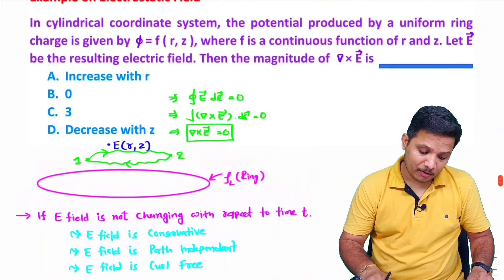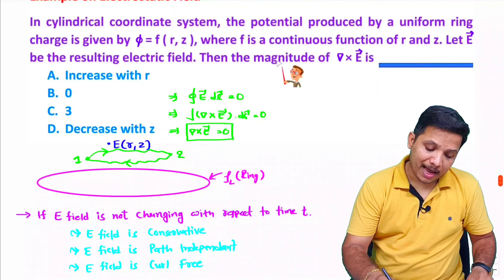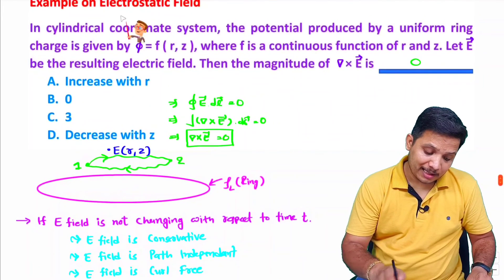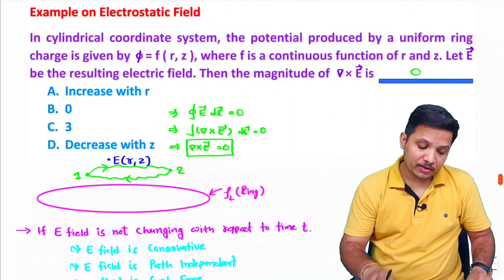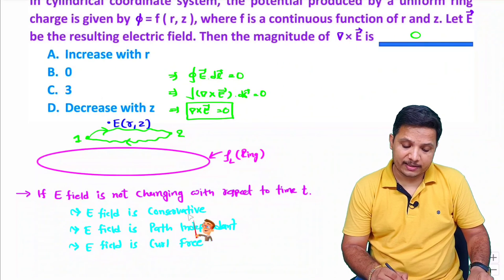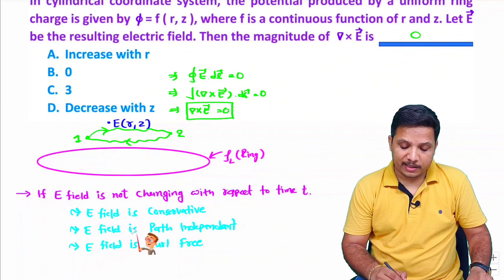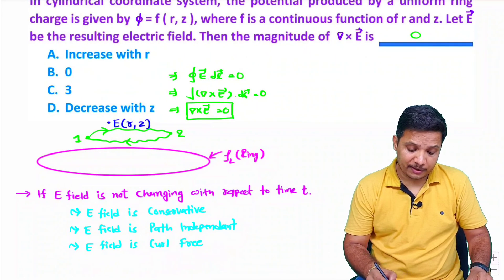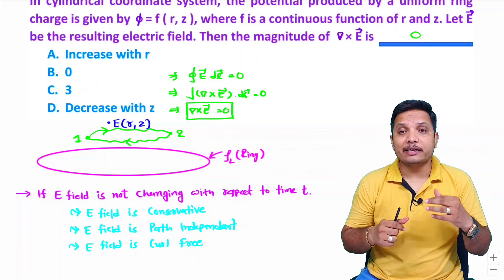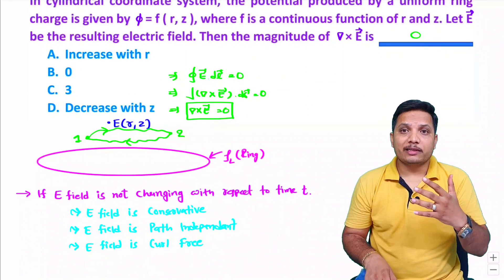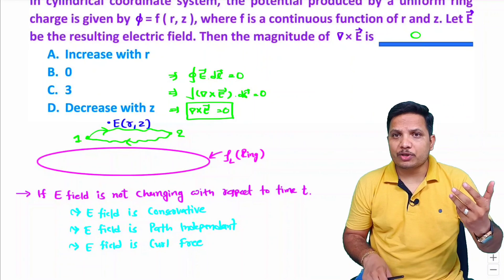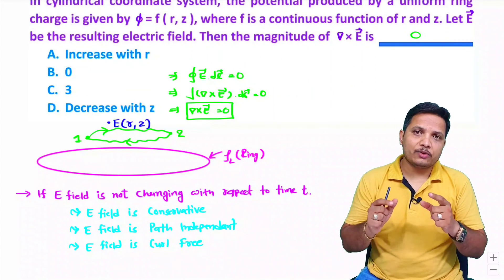What is the answer to the question? The magnitude of del cross E is 0, as we have been given with an electrostatic condition. For electrostatic conditions, these three statements are essential: the electric field is conservative, the electric field is path independent, and the electric field is curl free. Many exam questions are based on this type of understanding related to electrostatics. I hope this helps you understand many more questions regarding electrostatics. Thank you so much for watching this video.